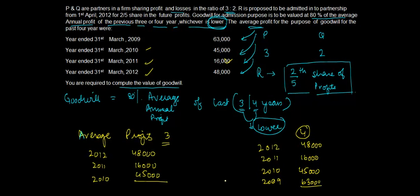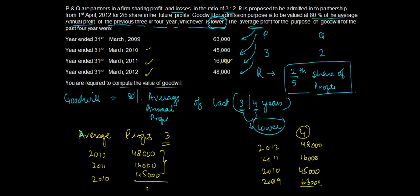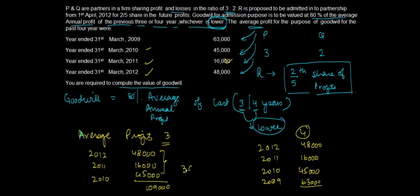Right, now if I take the average of these three numbers, what do I get? Let me just clear this off. 48 plus 16 plus 45, so the total profit I get is 109,000 divided by 3. The average profit that I get is 36,333.